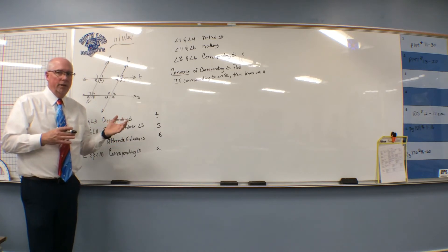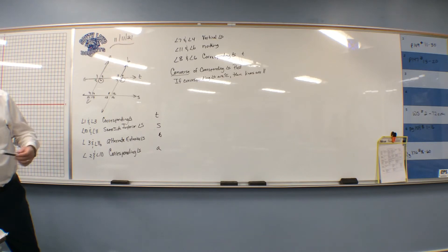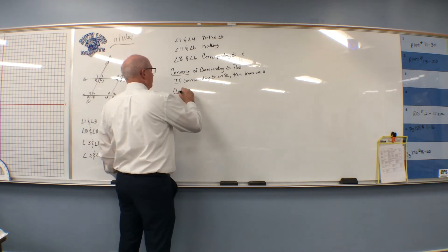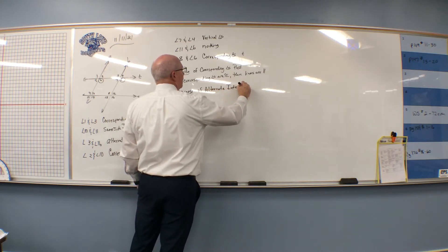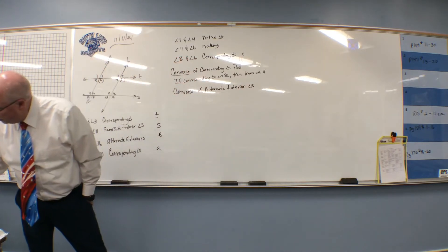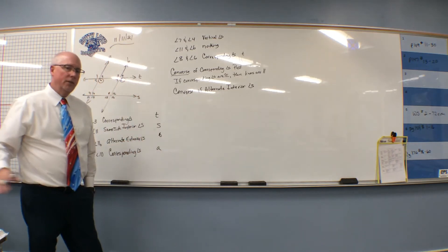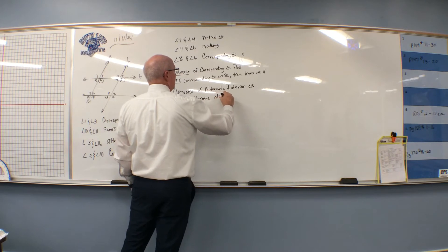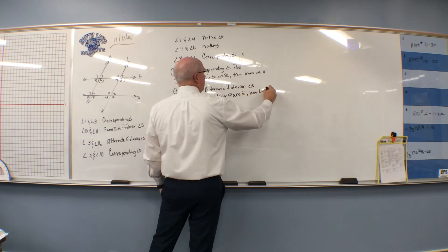So that means every one of those theorems we learned the other day — the converse is also true. If two lines in a plane are cut by a transversal such that a pair of alternate interior angles is congruent, then the two lines are parallel. We call this the converse of alternate interior angles. It says: if alternate interior angles are congruent, then lines are parallel.